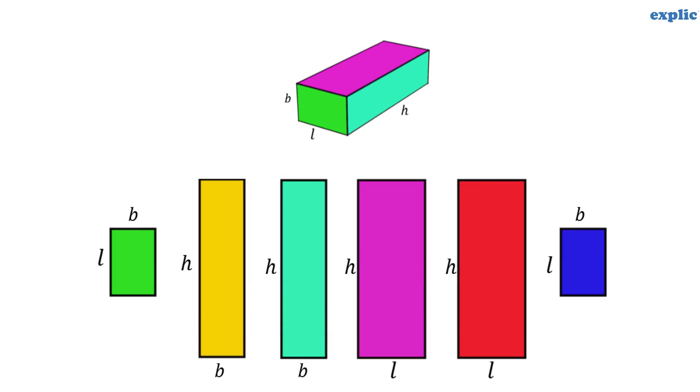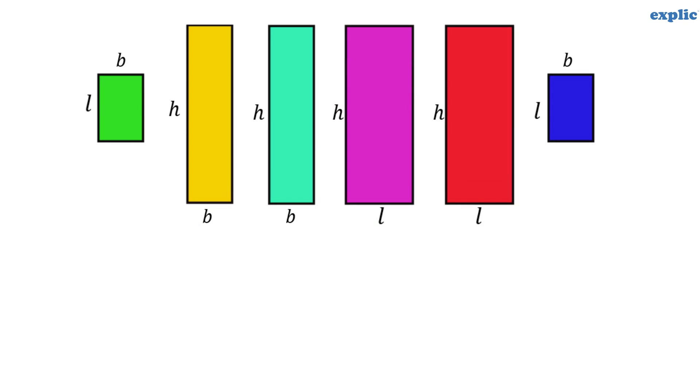If the length of the cuboid is L, height is H and breadth is B, the surface area of the cuboid would be 2LB plus 2HB plus 2HL.